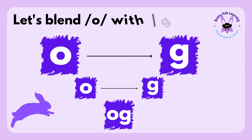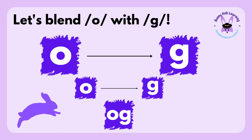One more to go for today — the letter O with the letter G. The sound of the letter O is O. The sound of the letter G is G. Drag the O longer: og. Shorter: og. Together: og, og, og.